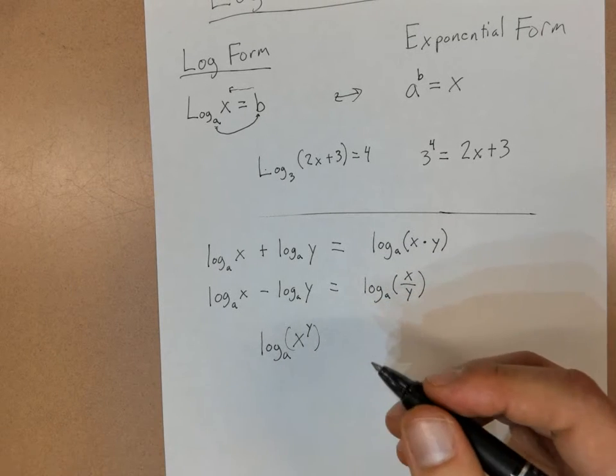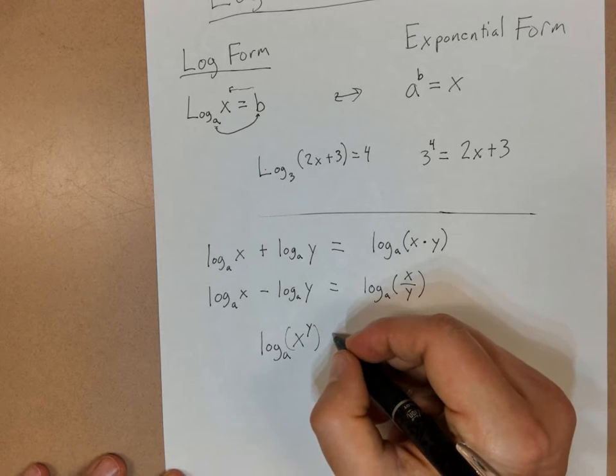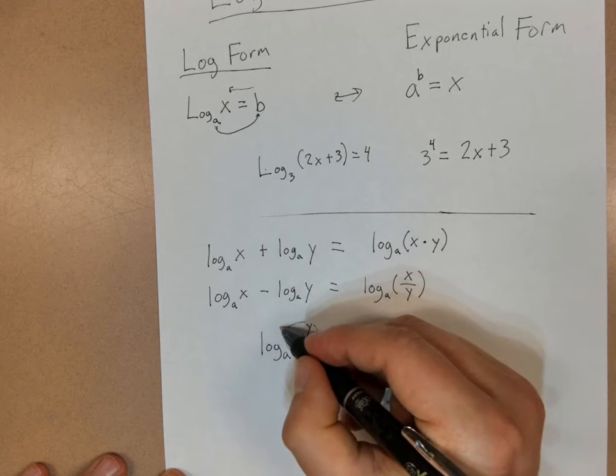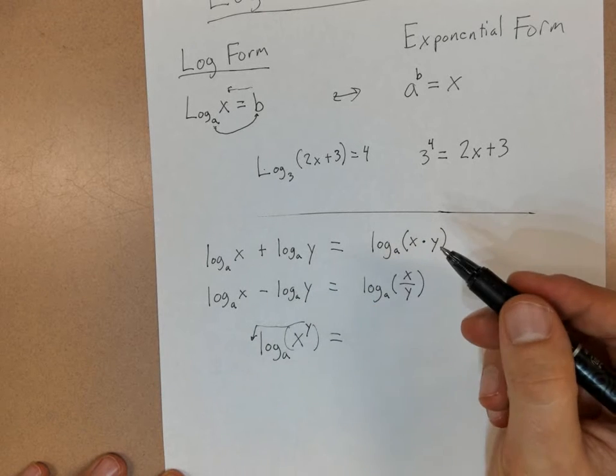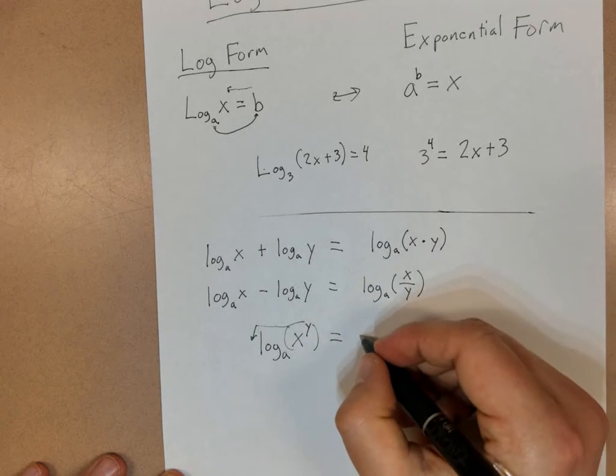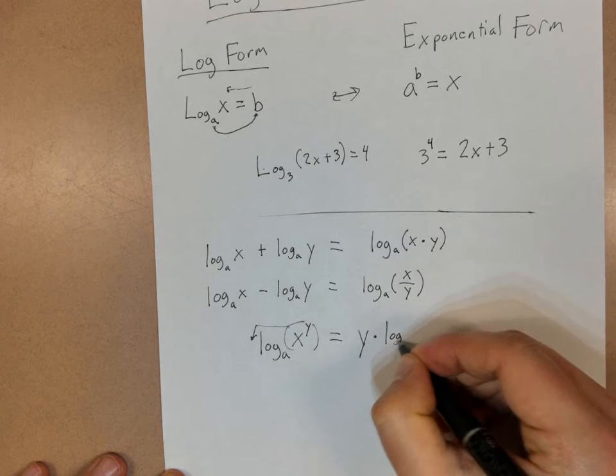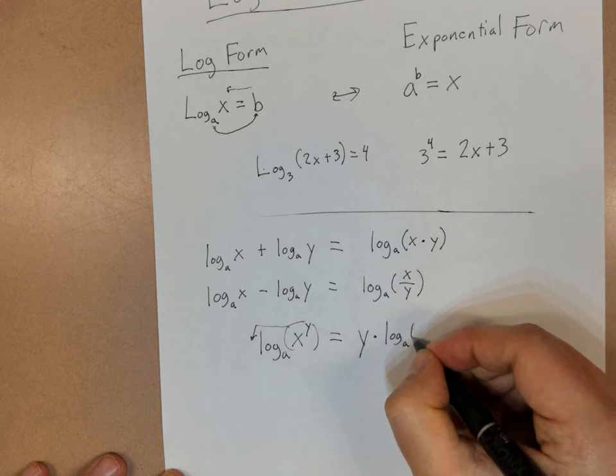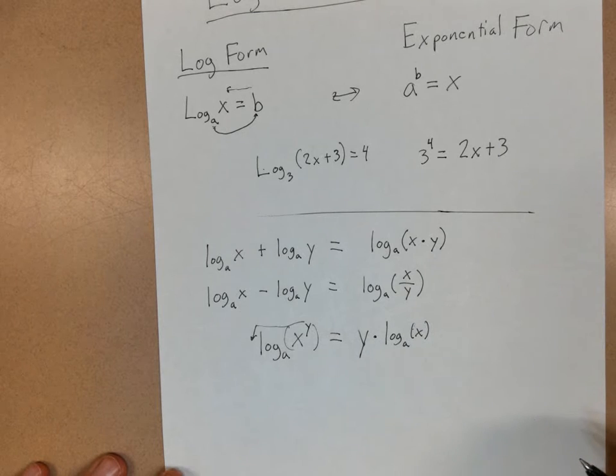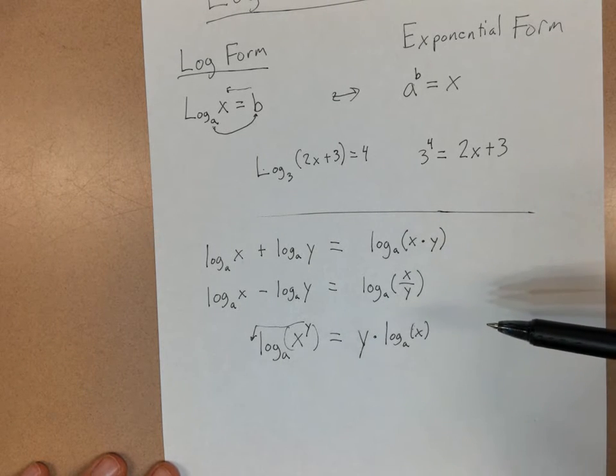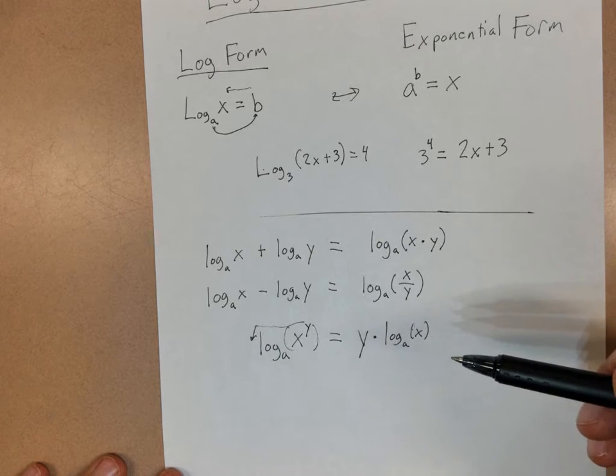logarithms are kind of like the opposite of an exponent. And so what we can do is we can actually take this exponent here and we can bring it out in front. And so this is equivalent to y times log base A of just x. So with all of these rules, again, know how to go back and forth between the two, because you will be expanding and condensing logs.